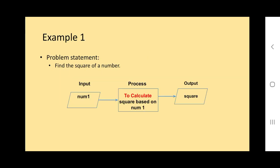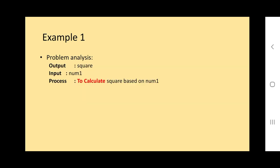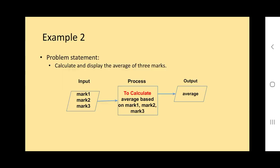Example one: Find the square of a number. We want to find the square, so we put square as output. To find the square of a number, the input is number - you can write 'num', 'A', 'B', up to you. The process is 'to calculate square based on num one.' So: output is square, input is num one, process is to calculate square based on num one.